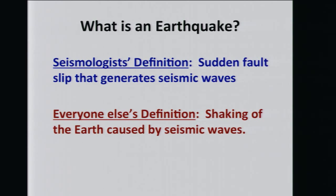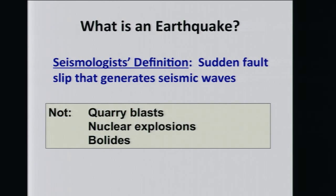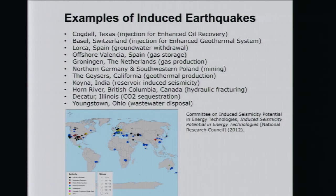Since I'm giving the talk, I'll stick to the seismologist's definition. Other things that cause ground shaking — quarry blasts, nuclear explosions, bolides — I won't speak about. What I am going to talk about are induced earthquakes: earthquakes induced through human activities. This map from an NRC committee report on induced seismicity potential in energy technologies, published in 2012, shows just a partial and incomplete list of areas around the world where induced earthquakes have occurred. They're best documented in the developed world, but they happen in the developing world as well — and are probably of particular concern there, because less earthquake-resilient communities suffer disproportionately.